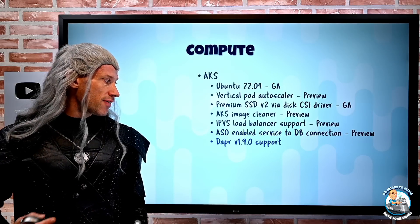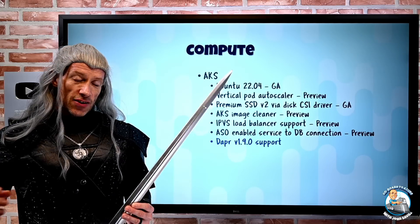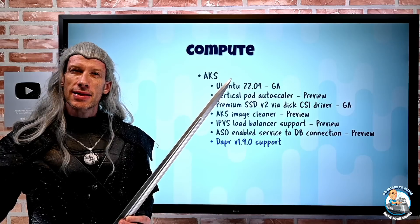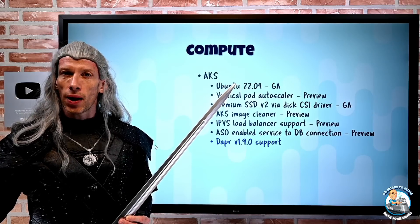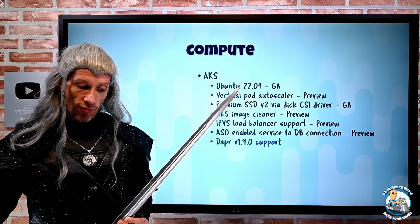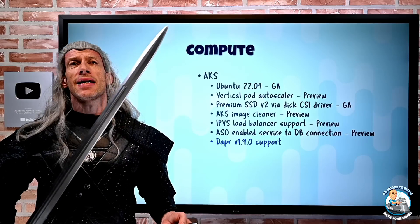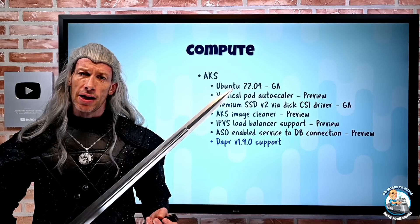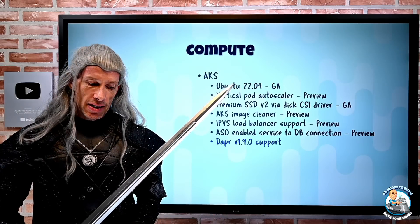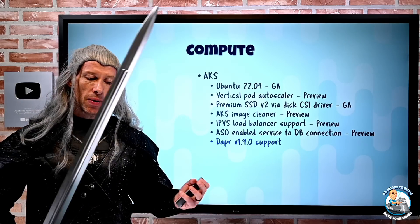Dapr v1.9.0 is now supported for AKS and Arc enabled Kubernetes. Arc is about extending that Azure control plane outside of Azure, and it can bring various services to those environments. Dapr is all about easing our creation and management of microservices. Dapr gives me a lot of capabilities around publish, subscribe, secret, state management, and much more. So this latest version, Dapr 1.9.0, is now supported.